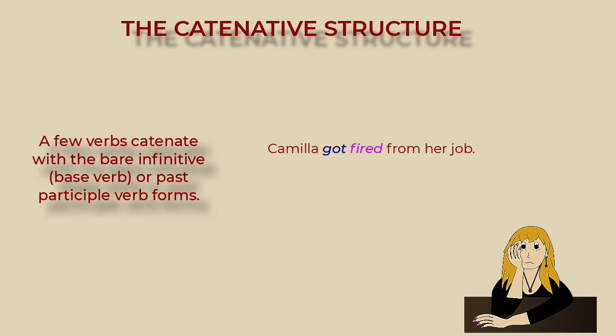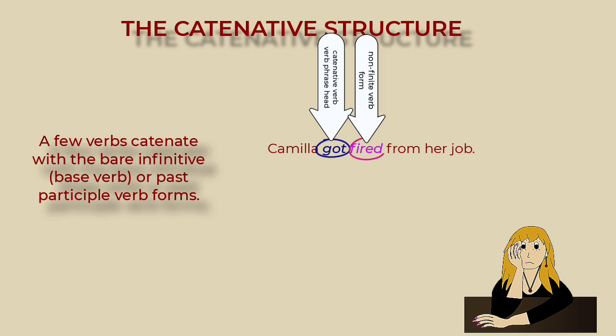In this example, 'got,' the catenative verb, links to the past participle 'fired.'